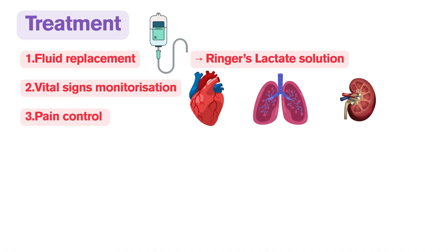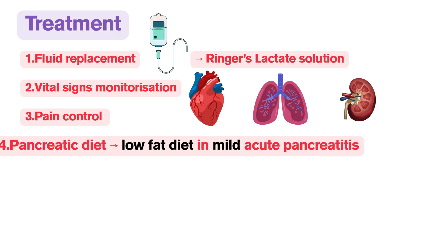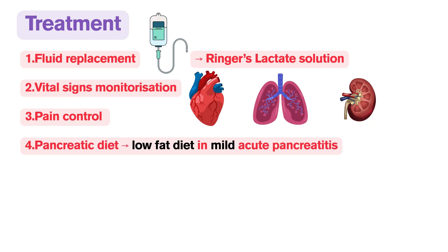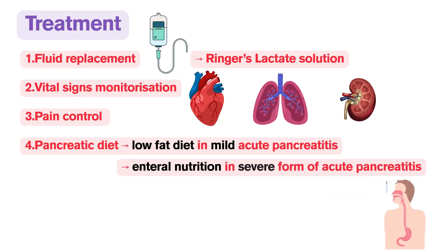Pain control is absolutely crucial, not only for patient comfort but also because uncontrolled pain can contribute to hemodynamic instability. Intravenous opioids such as morphine, hydromorphone, and fentanyl are first-line agents. In clinical practice, the patient must not eat for a couple of days until the pain improves. In mild acute pancreatitis, oral feeding with a low-fat diet can be resumed as soon as pain subsides. In moderately severe or severe forms, enteral nutrition via nasal jejunal tube is preferred over parenteral nutrition, as it maintains gut barrier integrity and is associated with fewer complications.